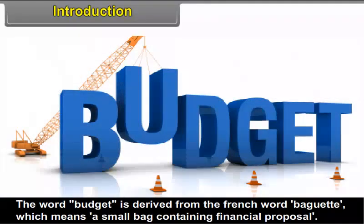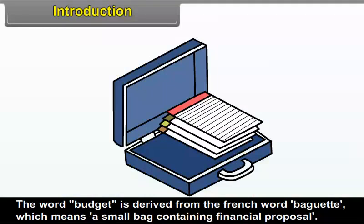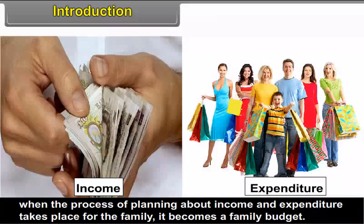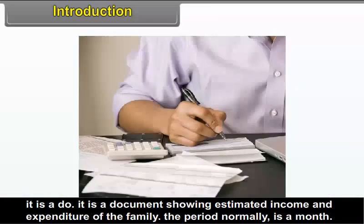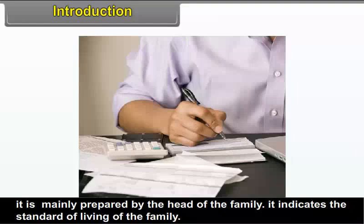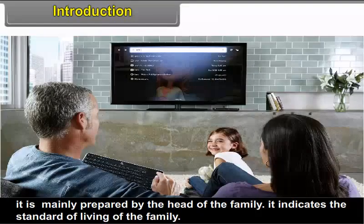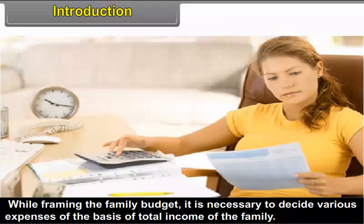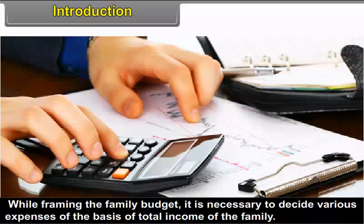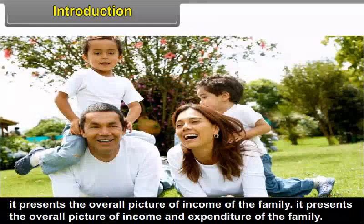The word 'budget' is derived from the French word 'baguette', which means a small bag containing financial proposals. When the process of planning about income and expenditure takes place for the family, it becomes a family budget. It is a document showing estimated income and expenditure of the family. The period normally is a month. It is mainly prepared by the head of the family, indicates the standard of living of the family, and presents the overall picture of income and expenditure.